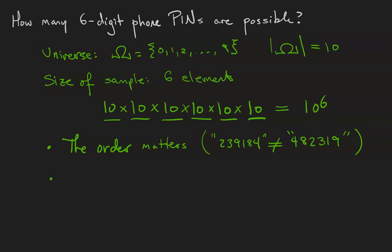And the other observation is that elements may be repeated. We may have, for example, the password one one one one one one with a question mark next to that because it is a terrible password.